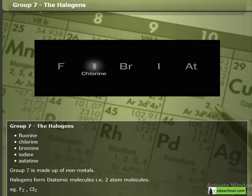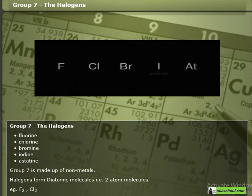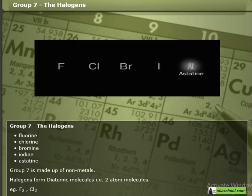Group 7, the halogens: fluorine, chlorine, bromine, iodine, astatine.